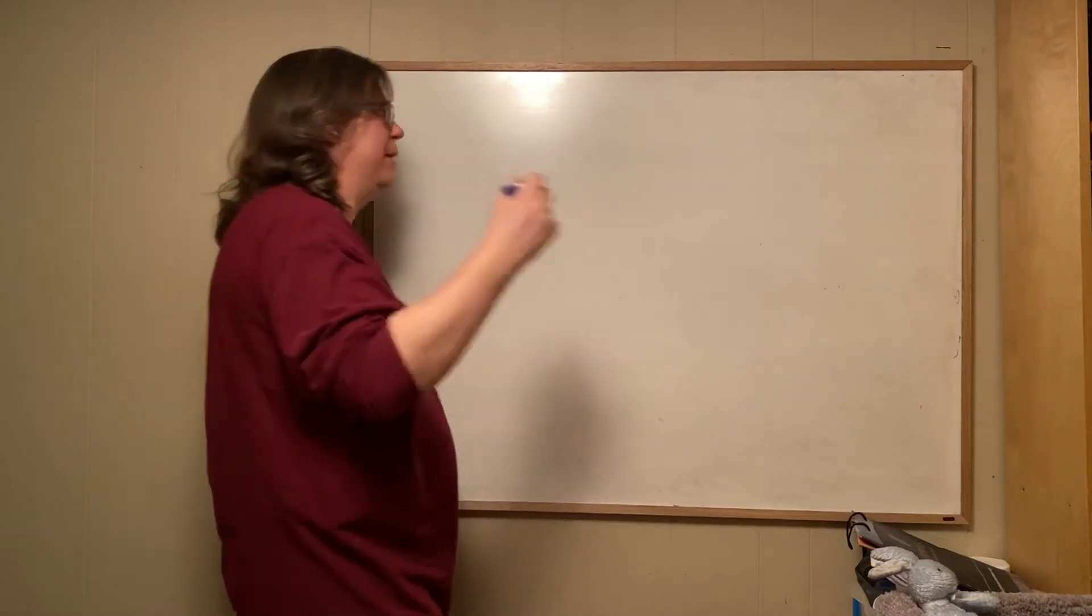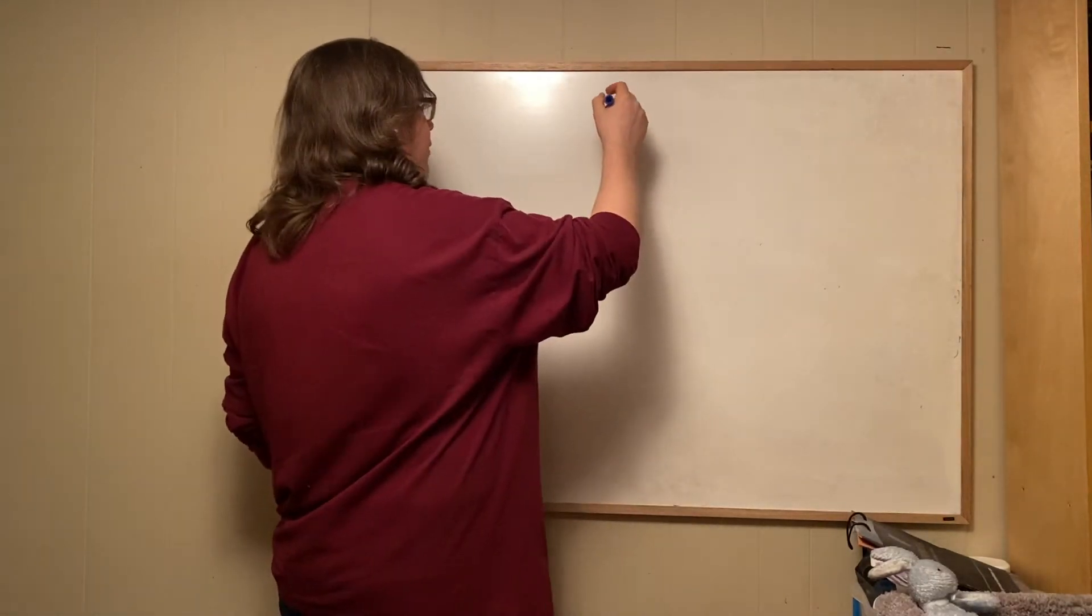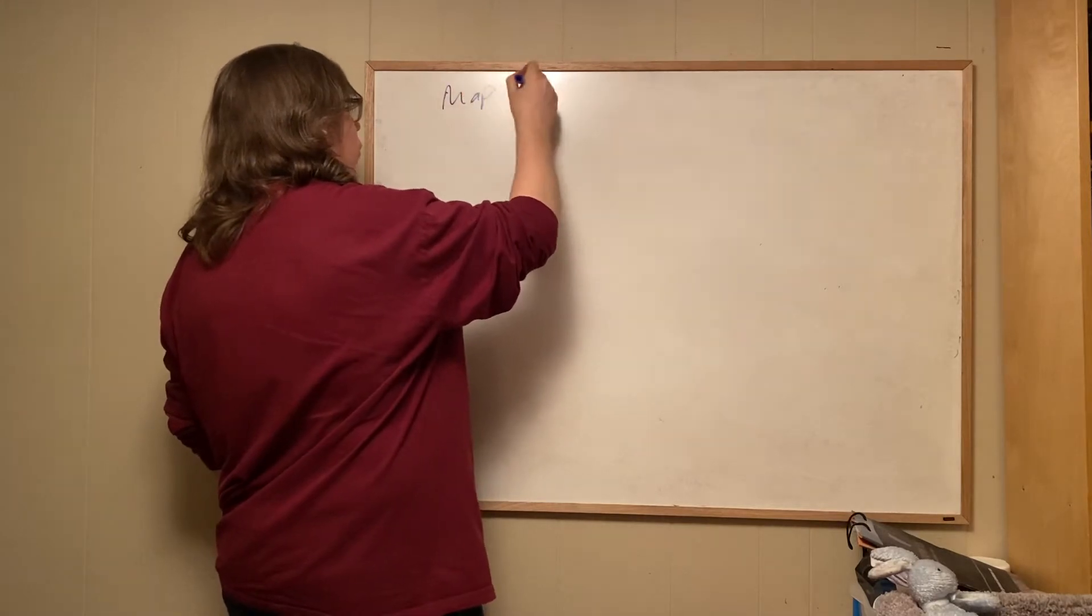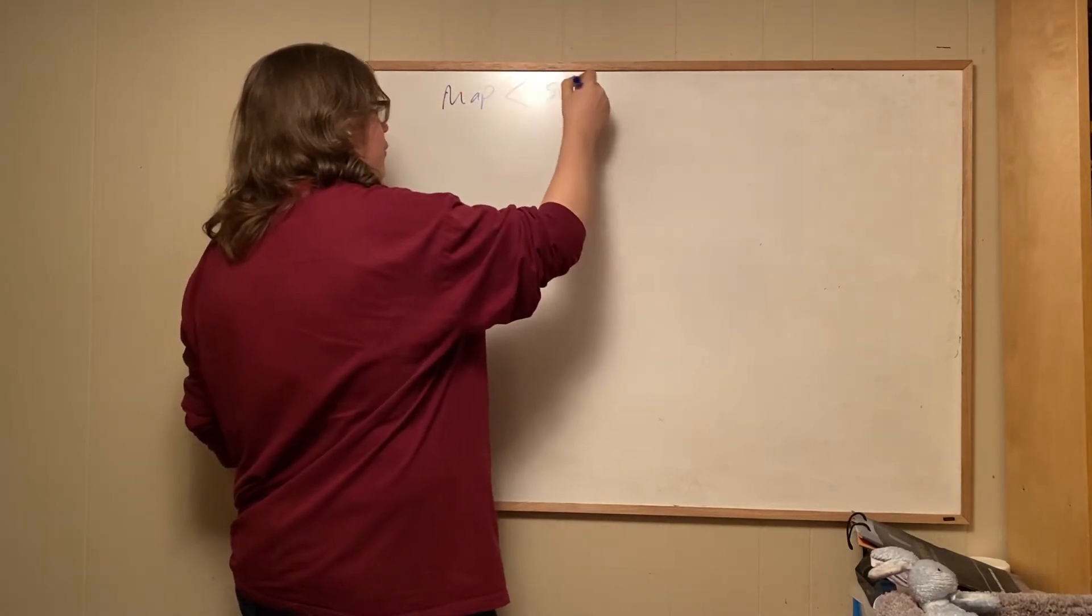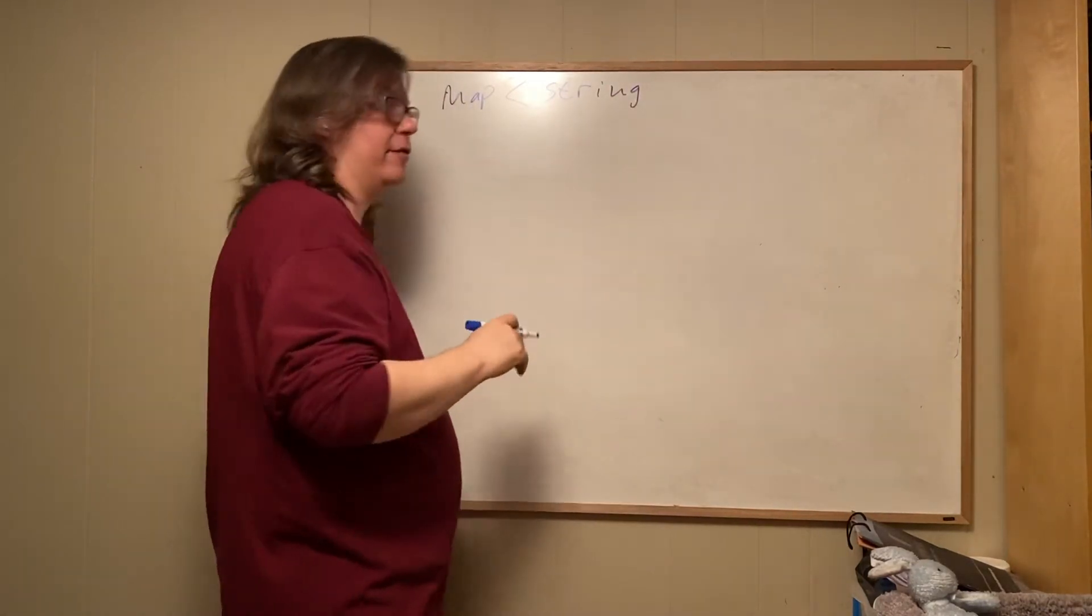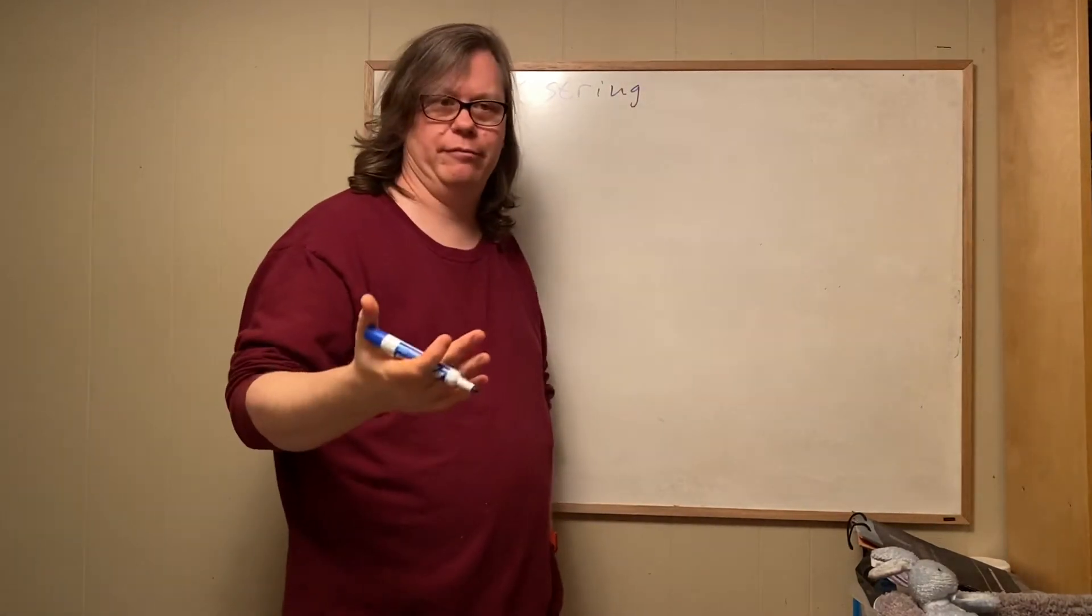So the only difference is that when you make a map, you're going to declare it a string for the key. For example, you can use anything. It has to have a hash code, right?